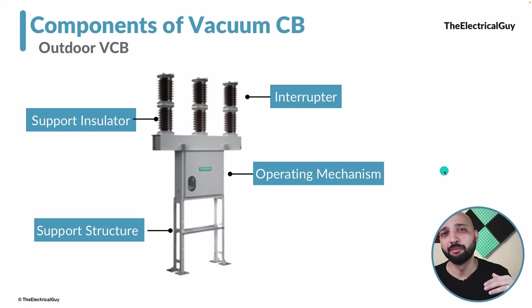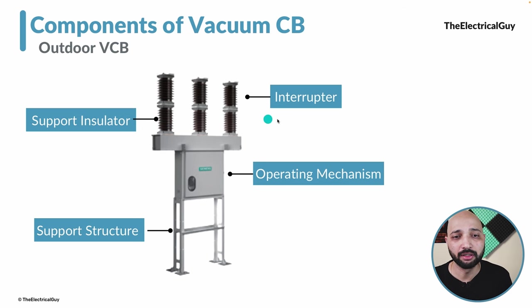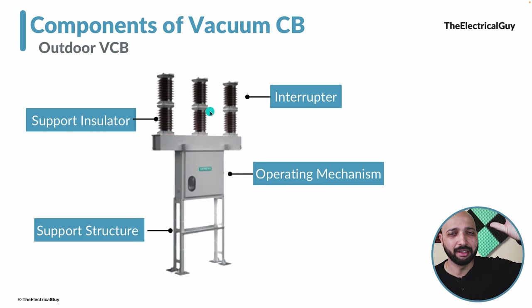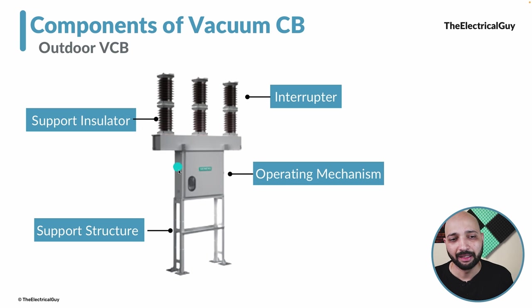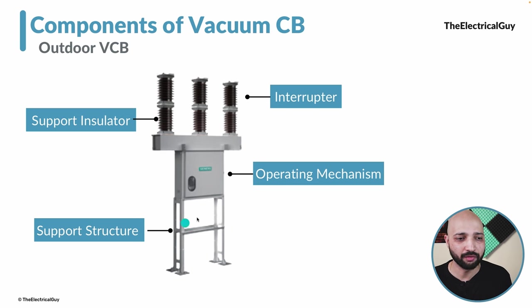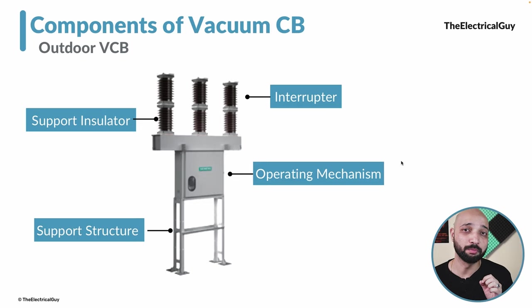If the vacuum circuit breaker is outdoor, the components will be similar to what we saw in the SF6 circuit breaker. The top portion is the vacuum interrupter made of porcelain, and inside that there will be a vacuum bottle. We also have a support insulator to maintain the ground clearance. There is a base frame which supports all three poles, and then the operating mechanism holds the spring mechanism and all control circuitries. Finally, there is the support structure. This is the assembly of the outdoor vacuum circuit breaker.